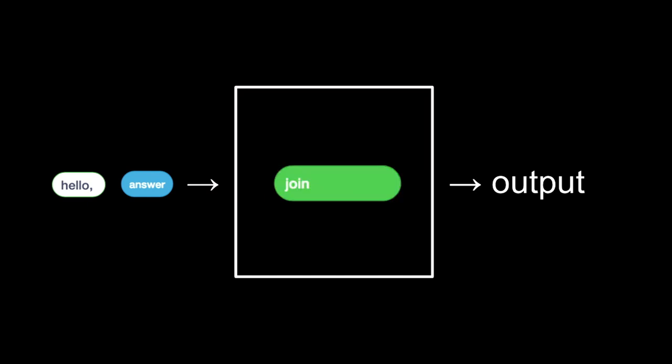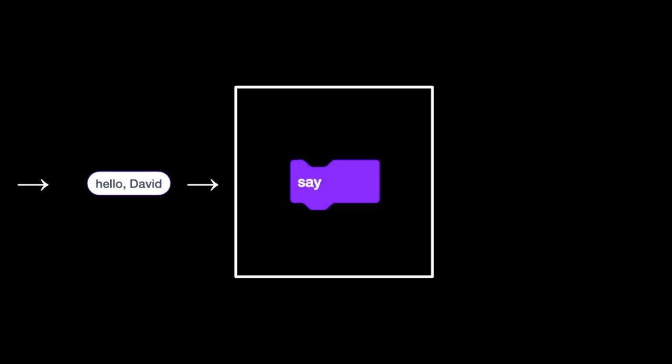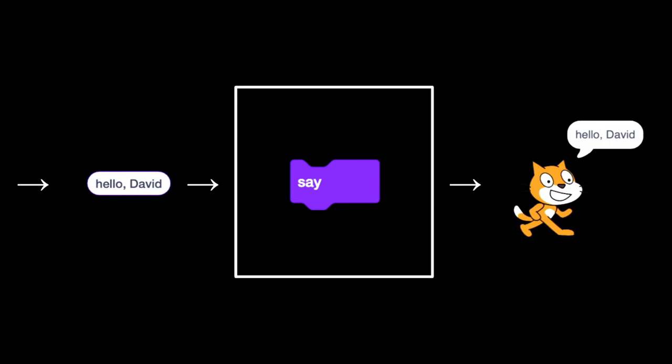A função agora vai ser Join, a saída vai ser Hello, David. Mas essa saída Hello, David agora se tornará a entrada para outra função, ou seja, o primeiro bloco, chamado Say, e isso terá o efeito colateral de imprimir Hello, David na tela.